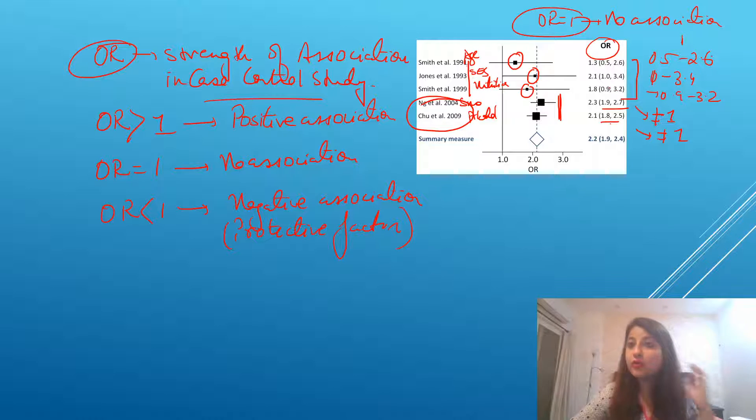If suppose here, instead of odds ratio, we had relative risk, again, it would be the same thing. Look at the intervals, whether it includes one or not. If it includes one, that means no association.